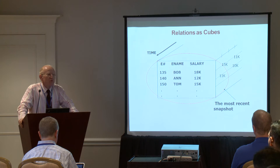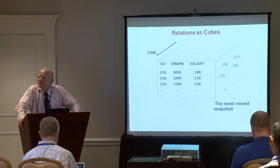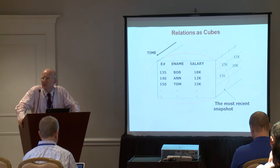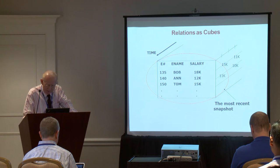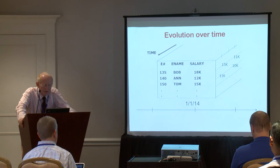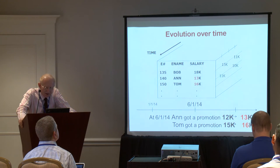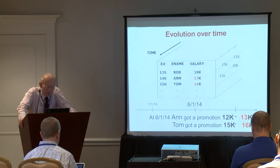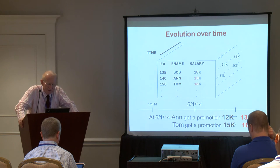The time dimension here is called valid time — it shows the validated period of the values. Other names include business time and logical time; in IBM DB2 it is called business time. Now let's look at the evolution of data over time. At 1/1/2014 we have our three-dimensional structure. At 6/1/2014 a promotion occurs: the salary moves from 12K to 13K for one employee, and Tom's salary goes from 15K to 16K.